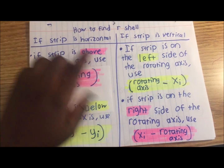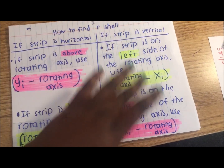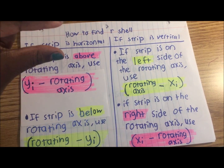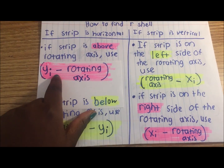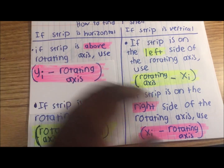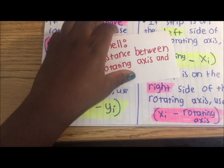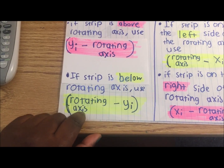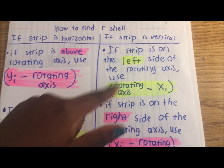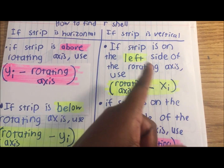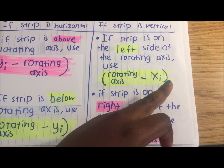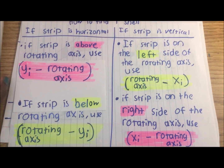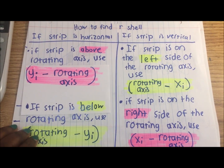Here's a little chart to help you find r_shell. For when the strip is horizontal: if the strip is above the rotating axis, use yi minus the rotating axis. If the strip is below the rotating axis, use the rotating axis minus yi. For when the strip is vertical: if the strip is on the left side of the rotating axis, use rotating axis minus xi; if the strip is on the right side, use xi minus the rotating axis. It would be pretty good to write this down — this is important.